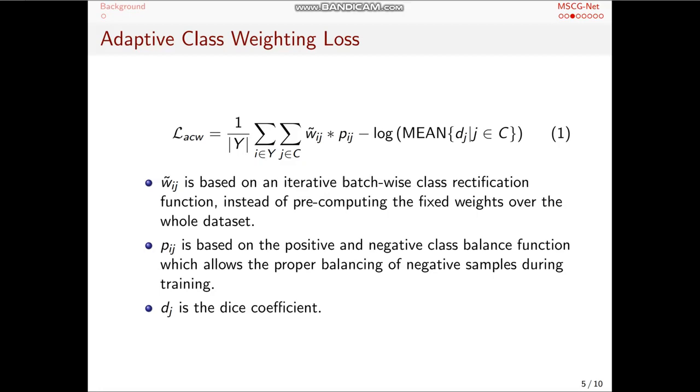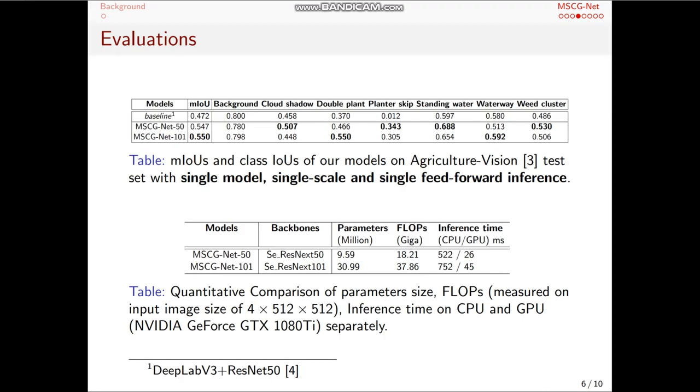So we finally trained and tested our proposed method on the Agriculture-Vision training dataset. The first table shows our results with single model, single scale, and single feed-forward inference. Compared to the baseline model, DeepLab v3 plus ResNet 50, our single model, the MSCG-Net 50, achieves above 7% higher mean IoU than the DeepLab v3 plus.